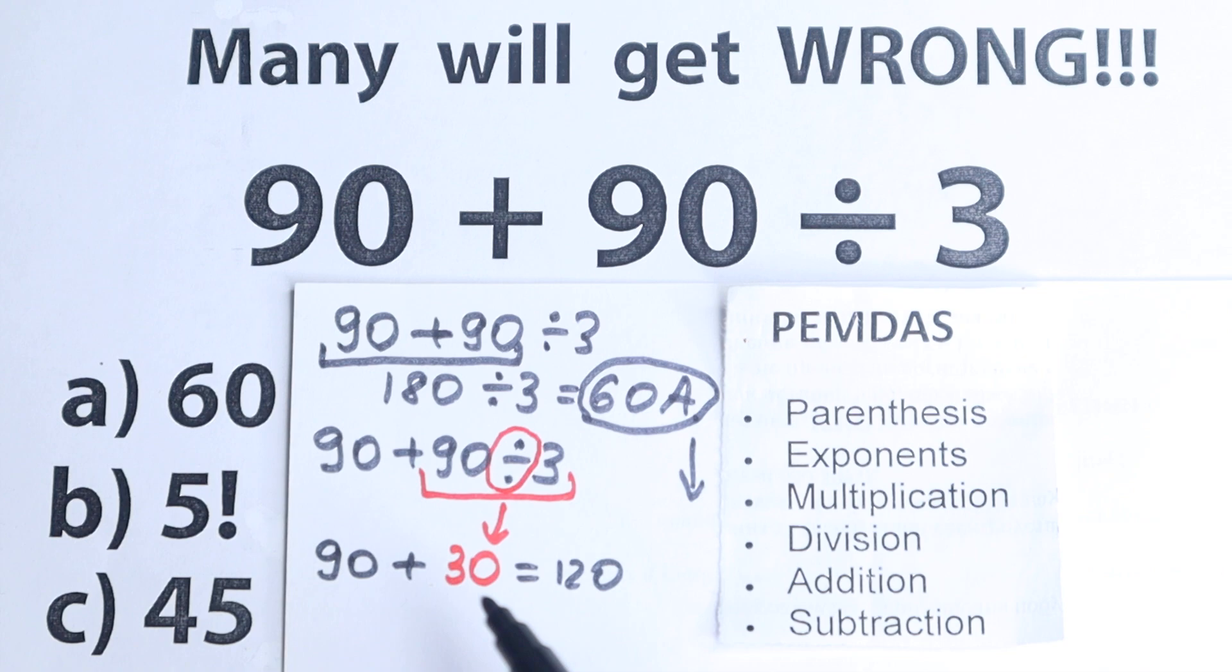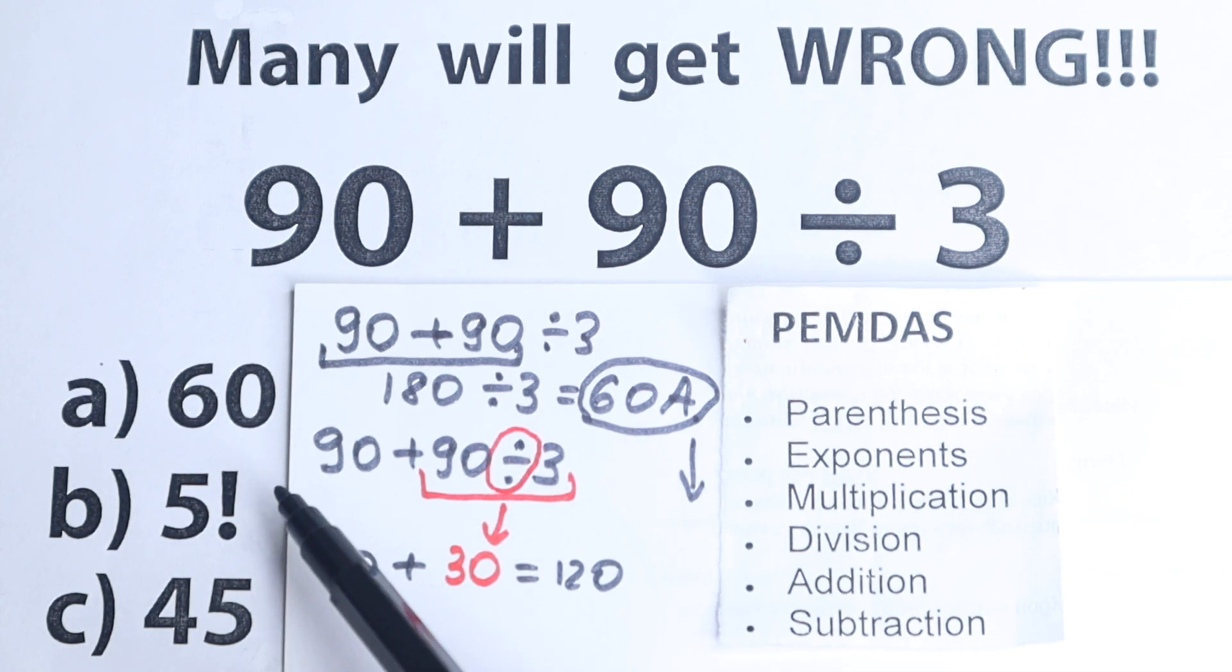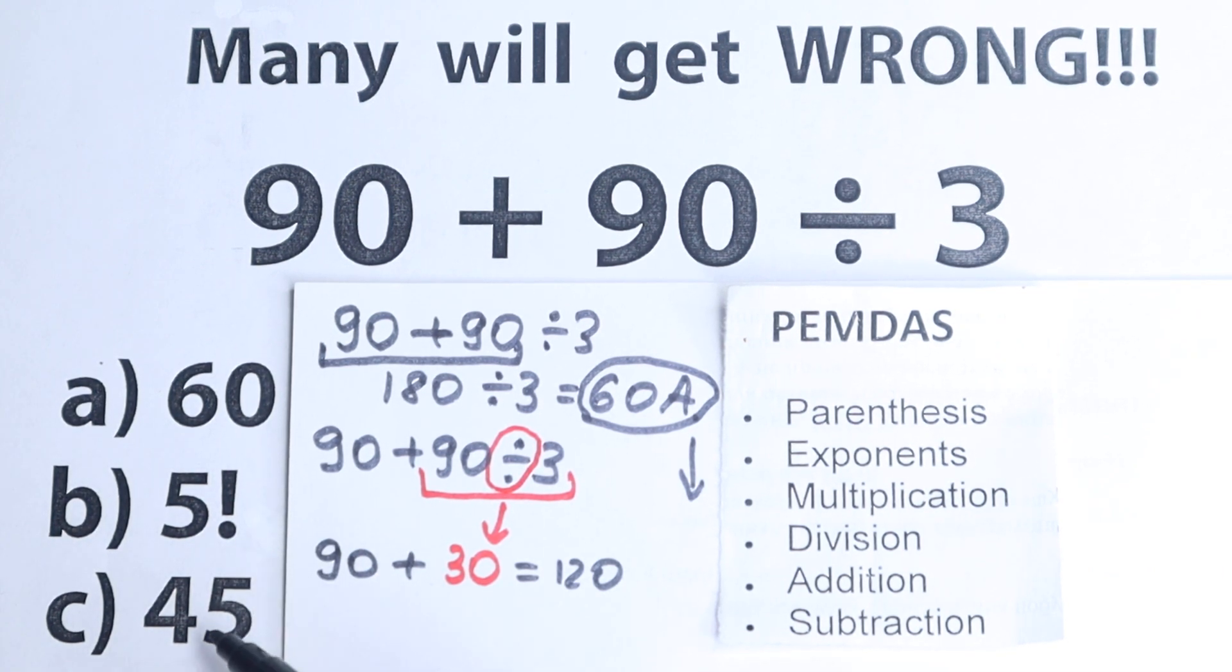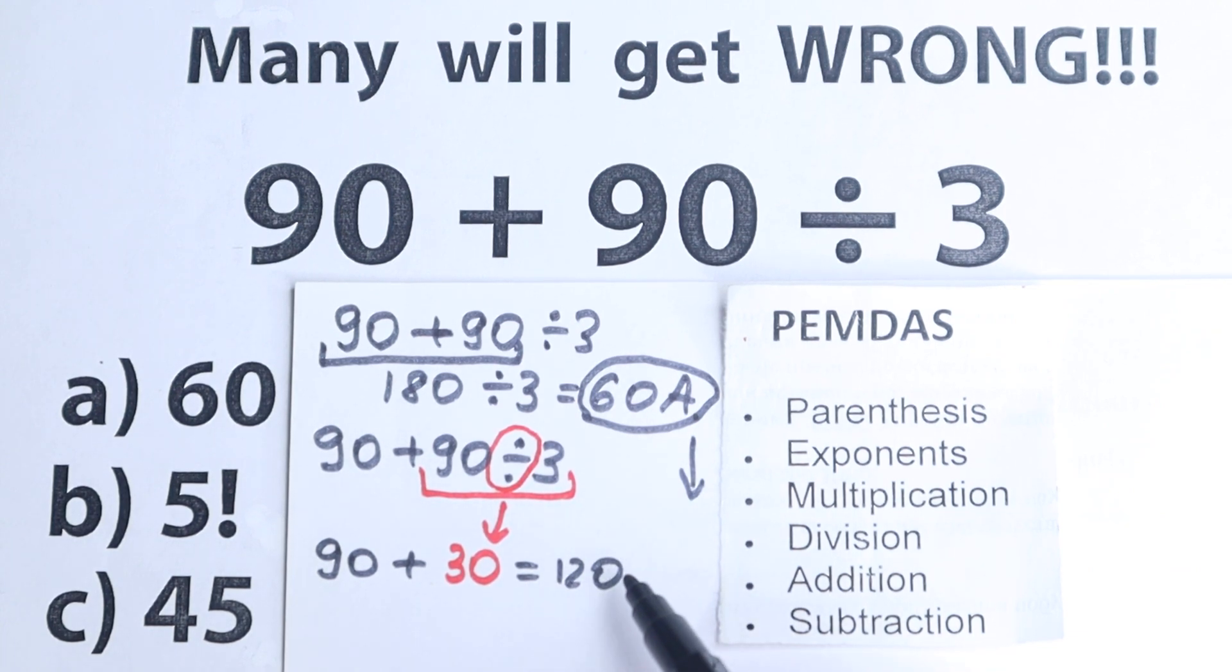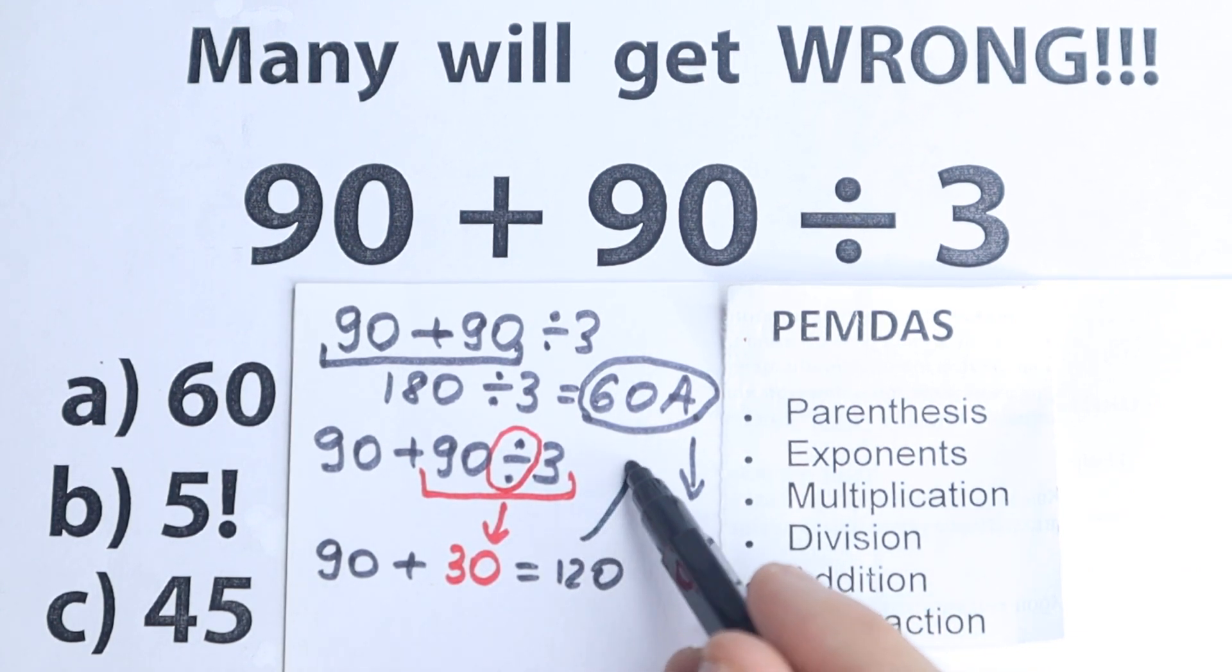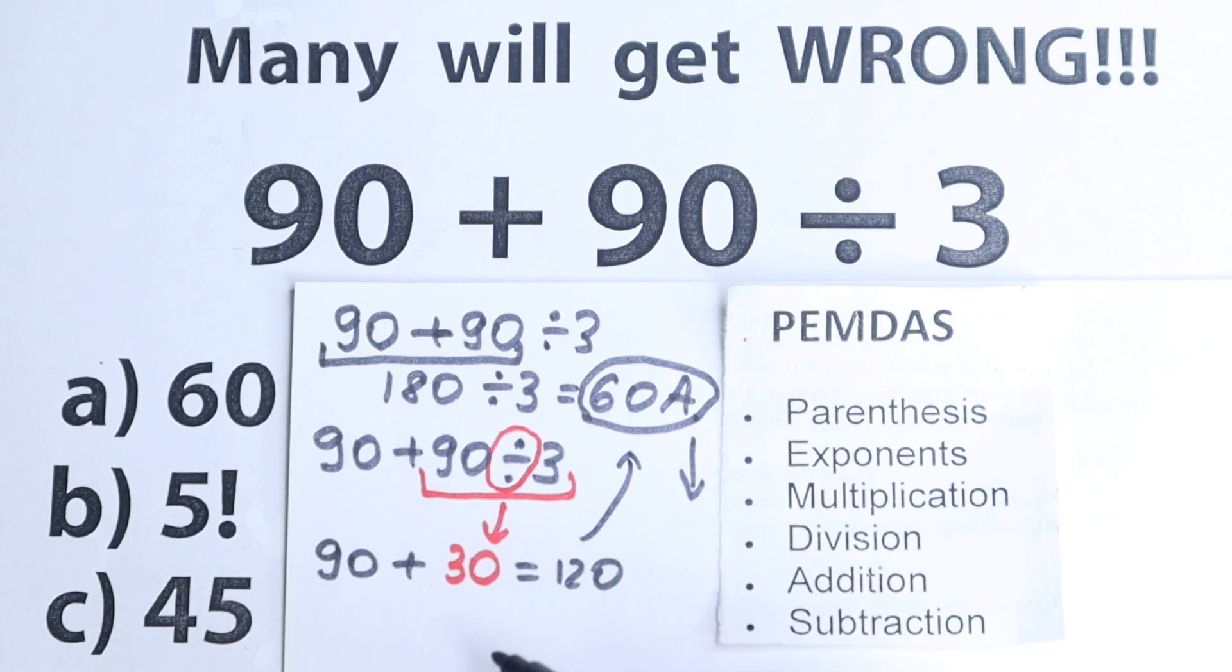But then a lot of students say, okay, but we don't have this option right here. We have 60, we have something like 5 factorial and 45. And then a lot of students go back to this 60, to this wrong answer, of course, because they don't have this option 120 in option section.